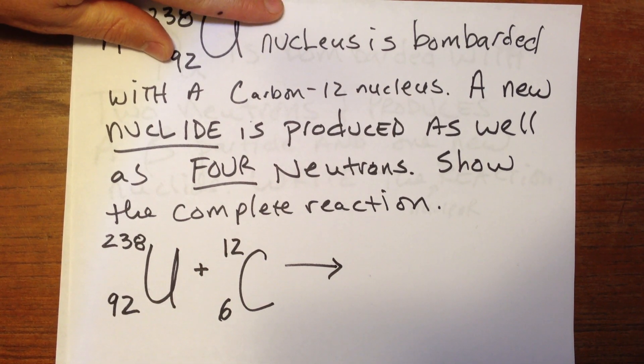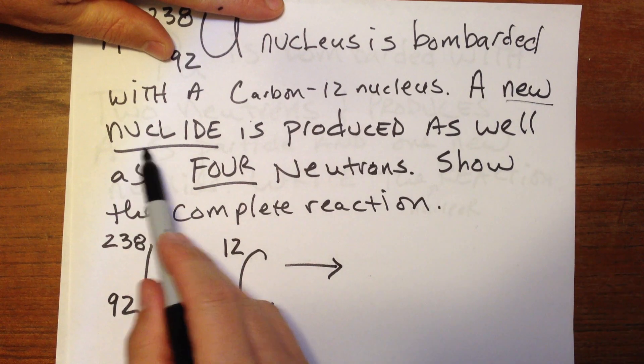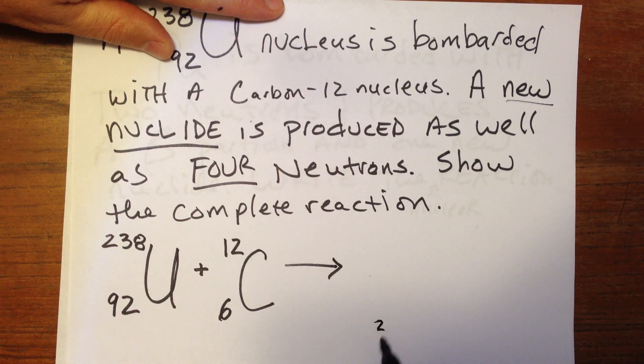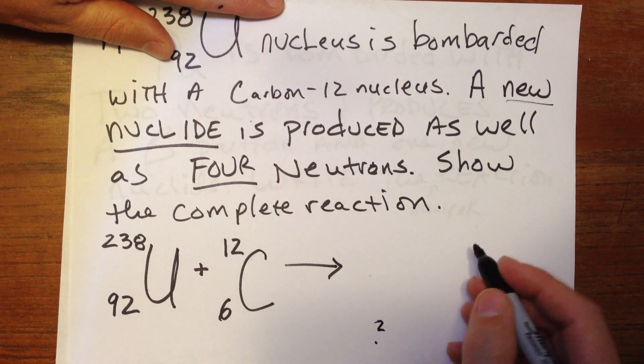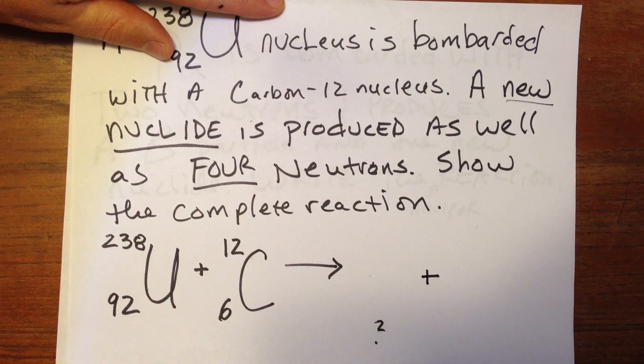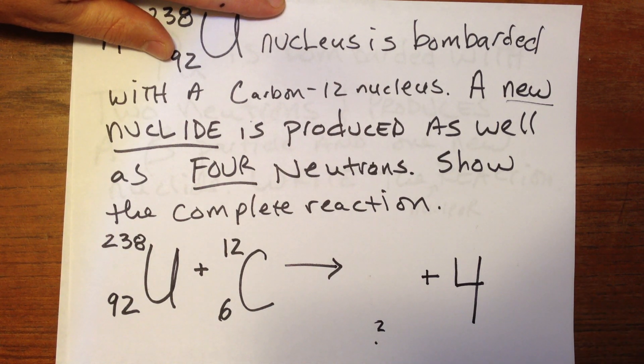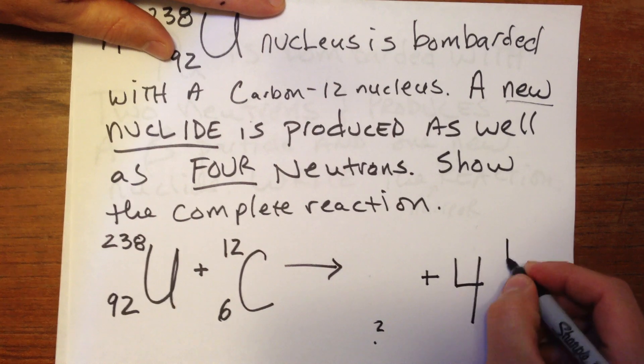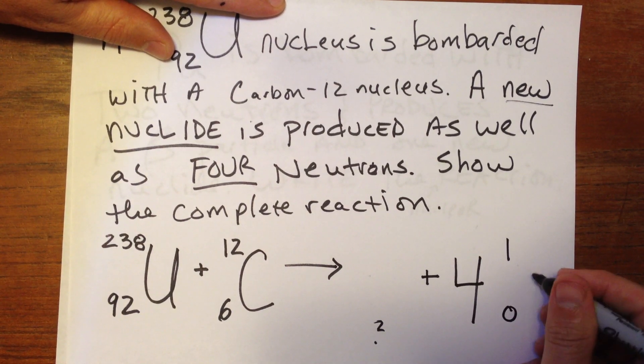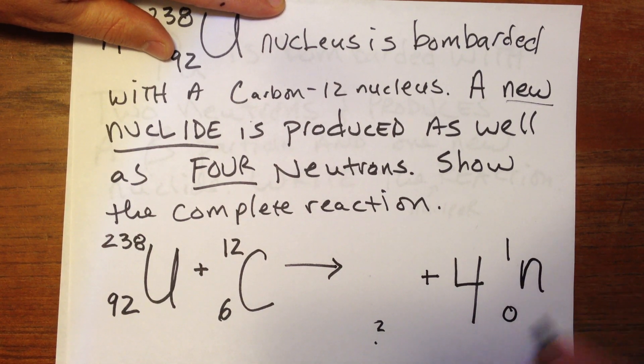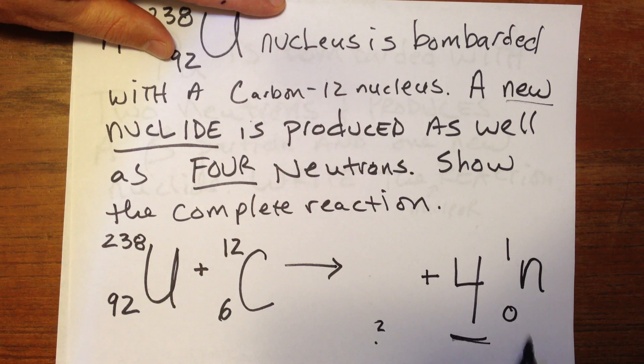And so we're told that we are going to make a new nuclide. It doesn't tell us what that is. We're going to figure that out. But we're also told that it's going to give off four neutrons. So the way we show that, we have four neutrons. And a neutron symbol has a mass of one and a Z number, atomic number of zero. So this is a coefficient. We show that there are four neutrons by putting the big number four out front and then putting what a neutron symbol looks like.